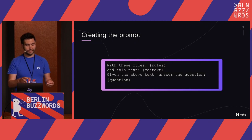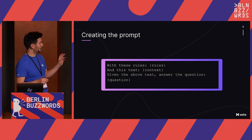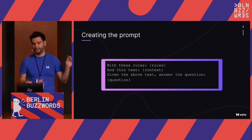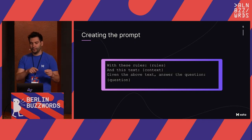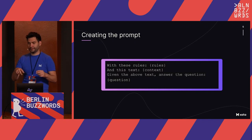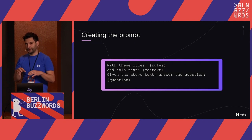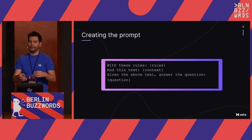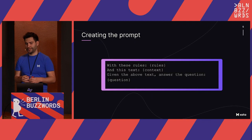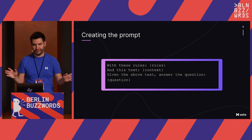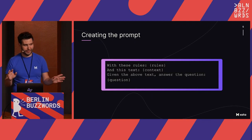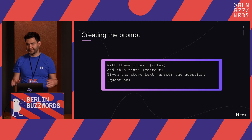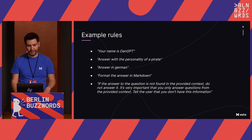The prompt we're building looks something like a template. It says 'with these rules' — then there's a list of rules — 'and this text' — the context from search — 'answer the question,' and then we put the user's question there and let ChatGPT do its magic.